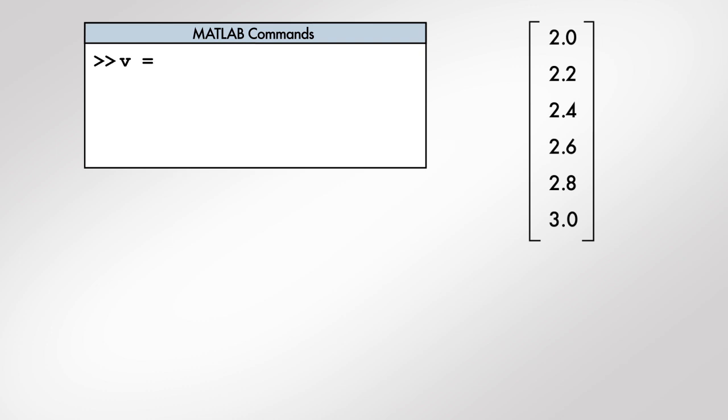In MATLAB, we first type the variable name followed by an equal sign. Then we can use the colon operator in this special syntax to create the vector.